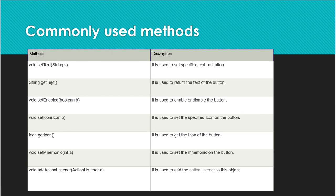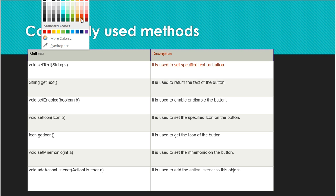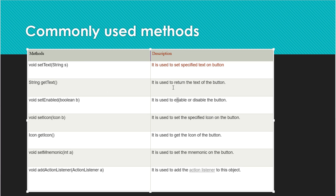The commonly used methods for JButton are: setText() — sets specified text on the button; getText() — returns the text of the button; setEnabled(boolean b) — enables or disables the button; setIcon() — sets an icon; getIcon() — returns the icon; setMnemonic() — sets a mnemonic key; addActionListener() — handles events by adding an action listener to the button.